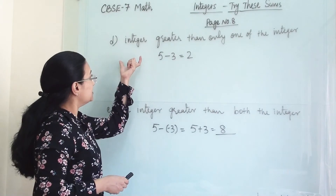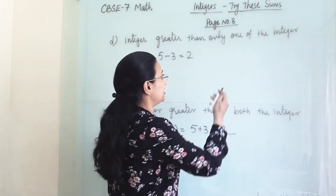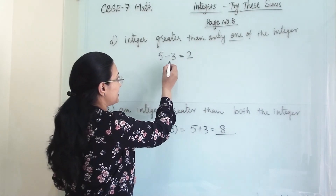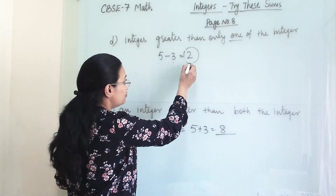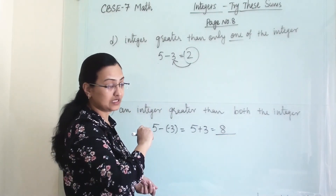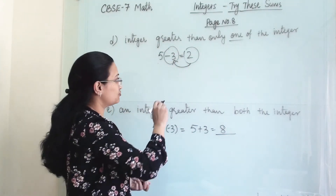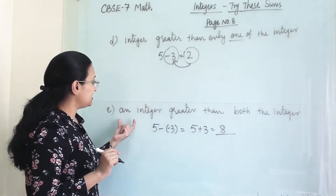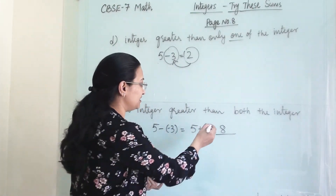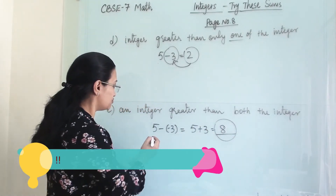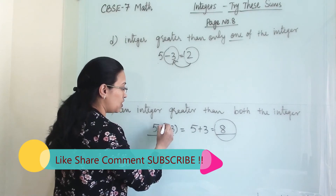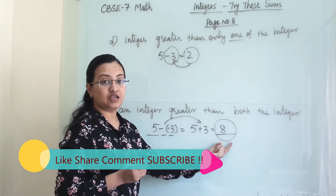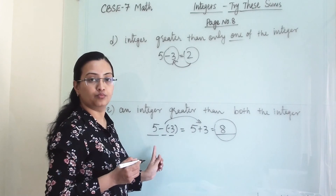Next, the difference should be greater than only one of the integers. For example, 5 minus minus 3 equals 5 plus 3, giving us 2... actually taking 5 minus 3 gives 2, which is bigger than minus 3 but smaller than 5. Finally, for an integer greater than both, we take 5 minus minus 3, which becomes 5 plus 3, giving 8, and 8 is bigger than both integers.